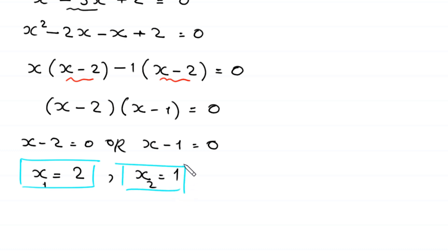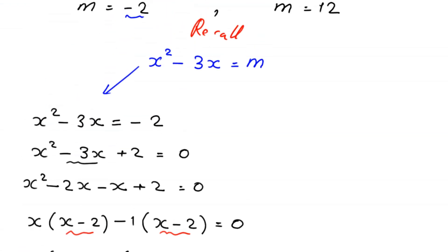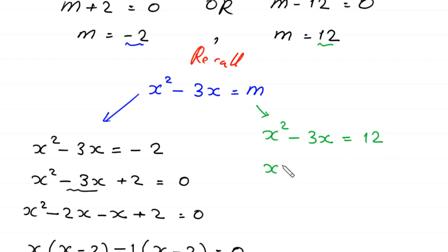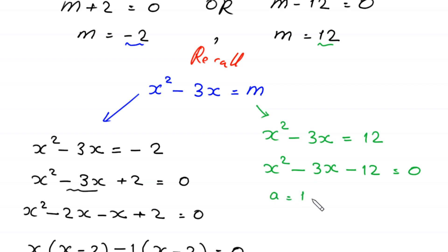To find the other solutions, we put m equals 12 into the equation. This gives x squared minus 3x equals 12. Moving 12 to the left-hand side: x squared minus 3x minus 12 equals 0. This quadratic is not factorable, so we solve it using the quadratic formula, where a equals 1, b equals negative 3, and c equals negative 12.